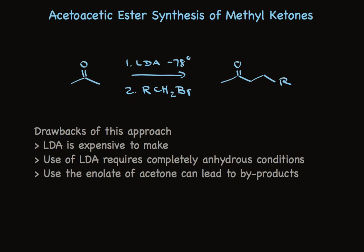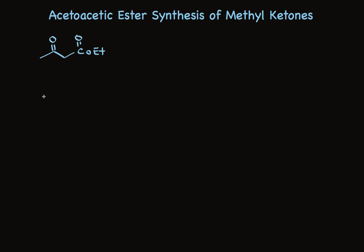There's a much older approach that works very well for making methyl ketones, or substituted acetones. Take a look. The starting material is a compound called ethyl acetoacetate. It's an ester, so we put ethyl way out in front. Acetoacetic ester is another common name. And it's this second name that's used to describe the synthesis of methyl ketones, the acetoacetic ester synthesis.